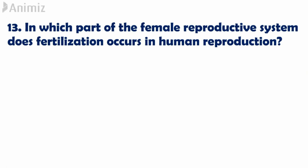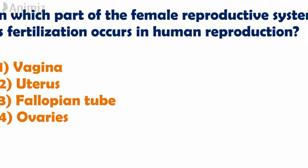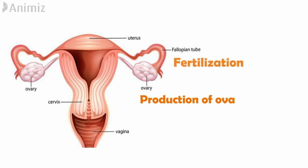The next question: in which part of the female reproductive system does fertilization occur in human reproduction? The main parts of the female reproductive system are the ovaries, fallopian tube, and uterus. There is a pair of ovaries close to the lateral walls of the pelvic area; the ovary produces ova. The ovum that comes out of the ovary enters the long muscular tube called the fallopian tube, where fertilization occurs. In the uterus, implantation occurs after fertilization.